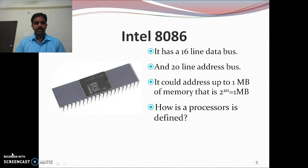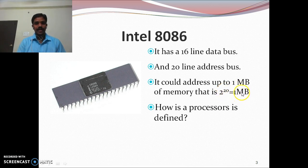Because it has 20 address lines, it can address up to 1 megabyte. That is 2 to the power of 20, where the 20 indicates the number of address lines. 2 to the power of 20 is equal to 1 mega. So the addressing capacity of the 8086 is 1 megabyte.